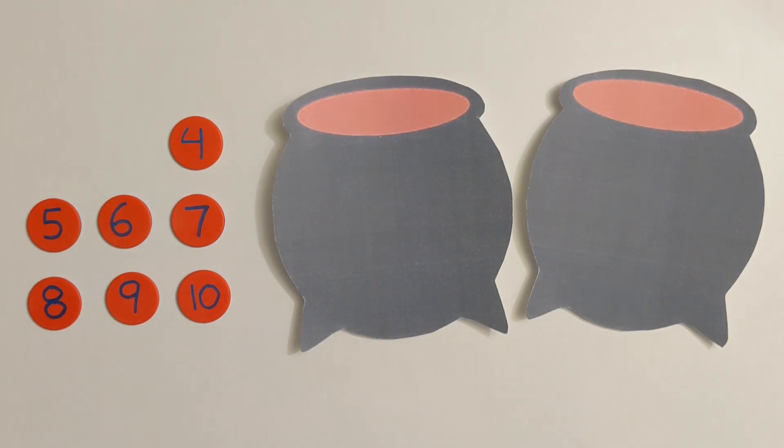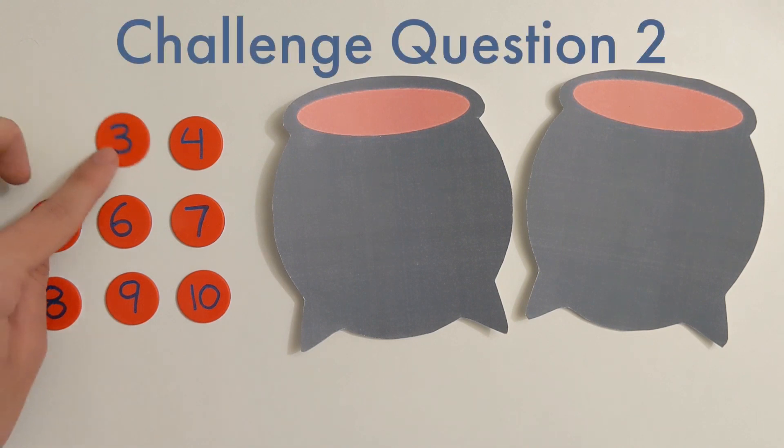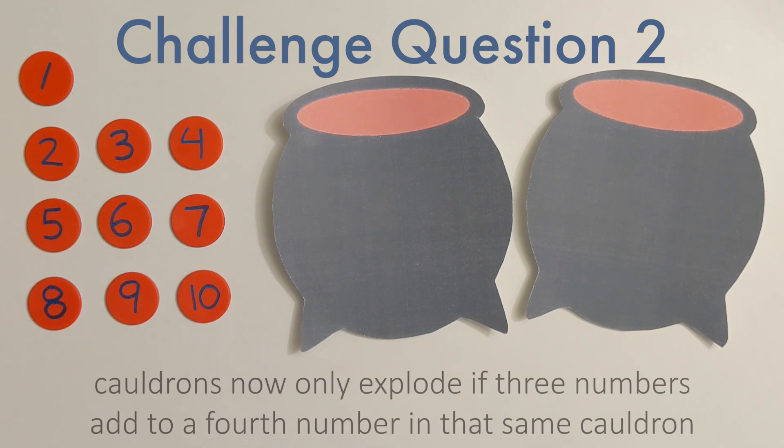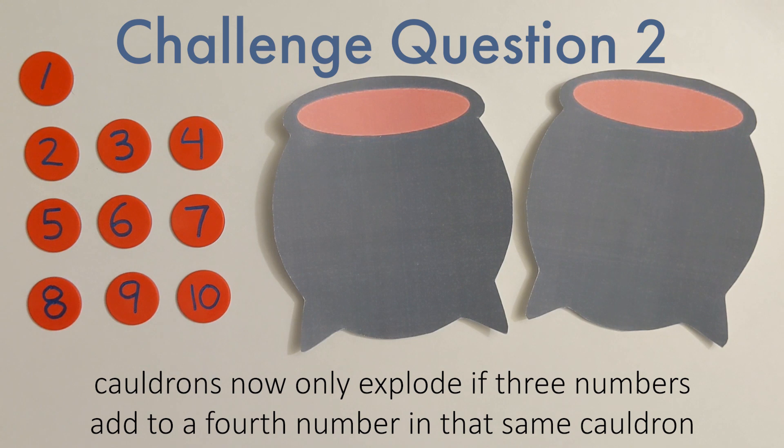Our last question is a difficult one. For this one, we're going to once again start with the number 1, only this time, we're going to slightly alter our second rule, which determines when a cauldron explodes. Now, instead of exploding when 2 numbers in the cauldron add up to a third, it will only explode when 3 numbers in the cauldron add up to a fourth.